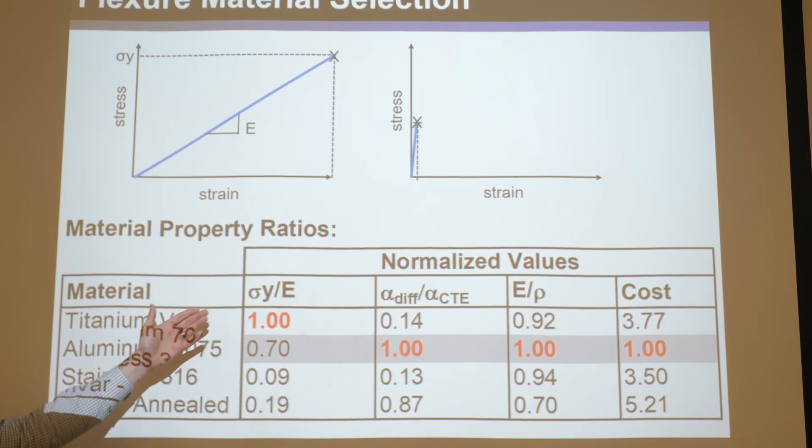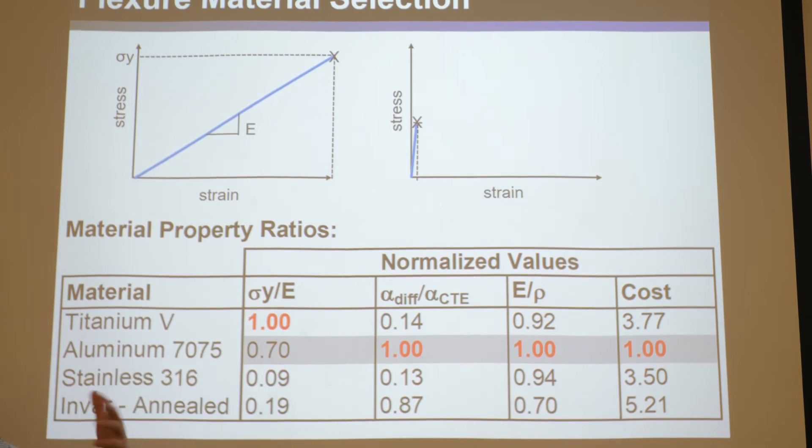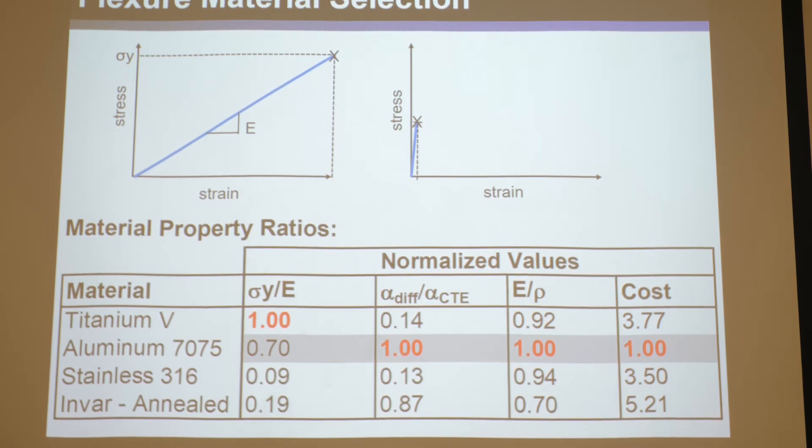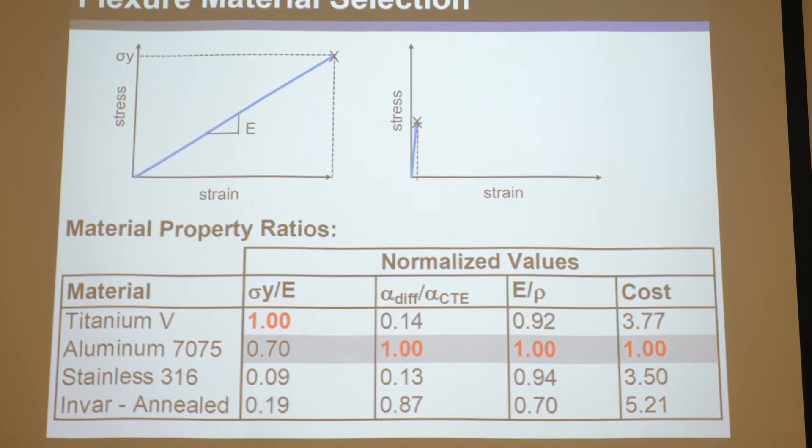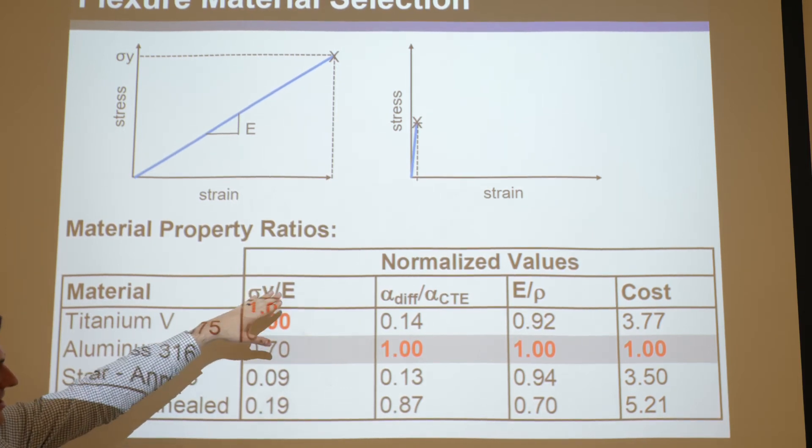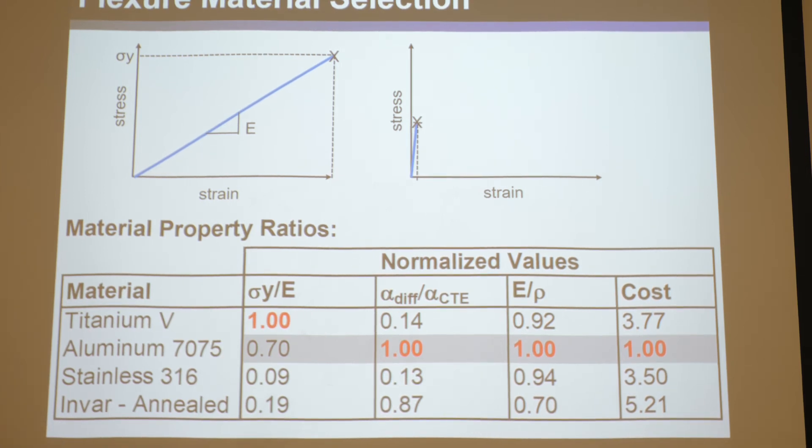So if you plot the ratio of yield strength to modulus, and you want a flexure to get a large range, remember one of the disadvantages of flexures is they don't get much range. Other bearings can get infinite range, flexures are limited in range. So the game is always find out how you can increase the range as much as possible, and material properties can help. The material property you want to compare is you want to plot yield strength versus Young's modulus of the material and find out which one is, you know, make a big list of all the materials you have available and calculate their yield strength versus modulus and put them in the chart. And if you really care about range, you want the one with the largest ratio.